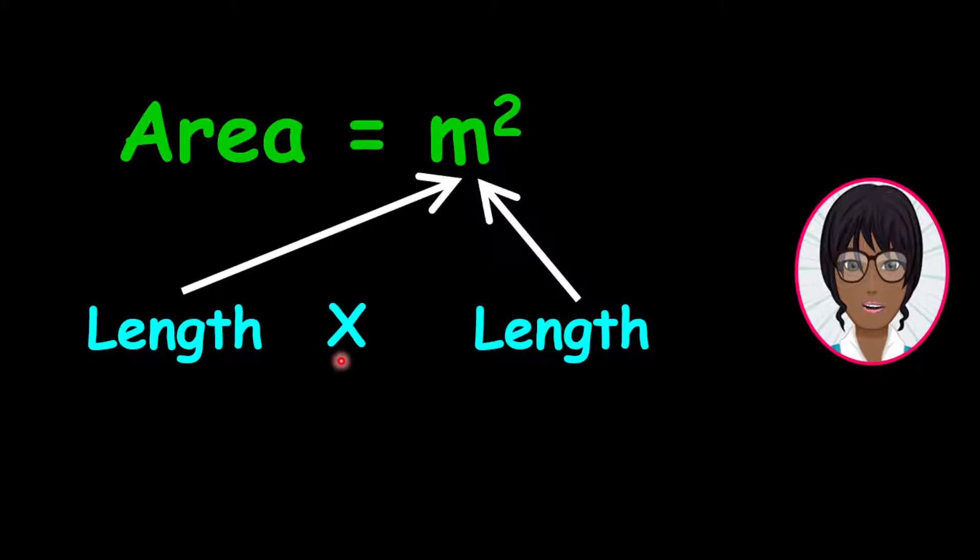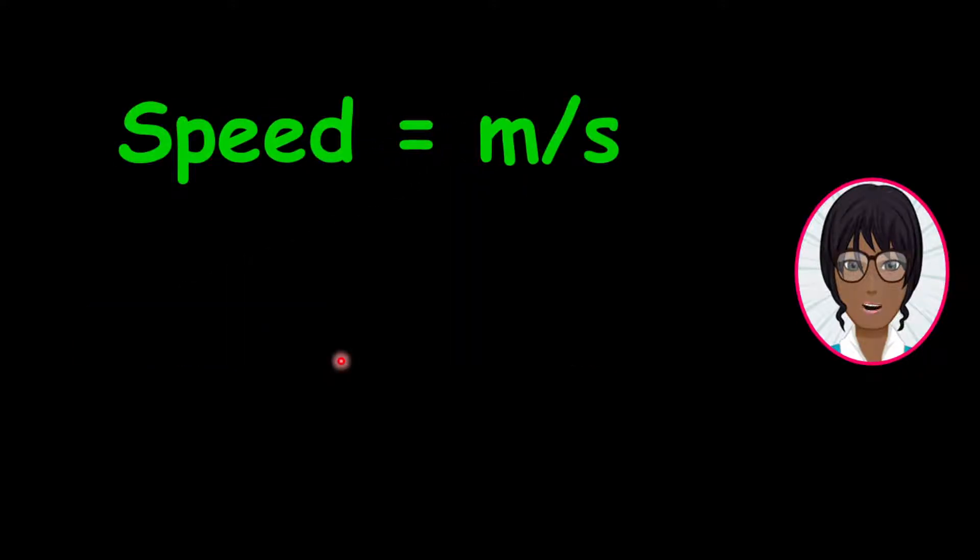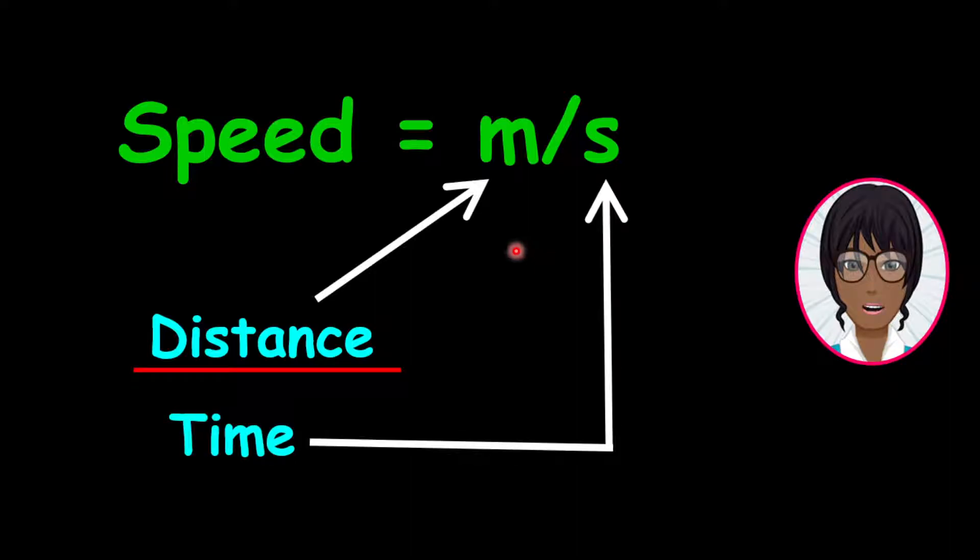Let us look at another example. Speed is measured in meter per second. Look at the unit closely. This means that speed is a combination of length and time. This length is also called distance. Notice that the combination here is a division of length by time.